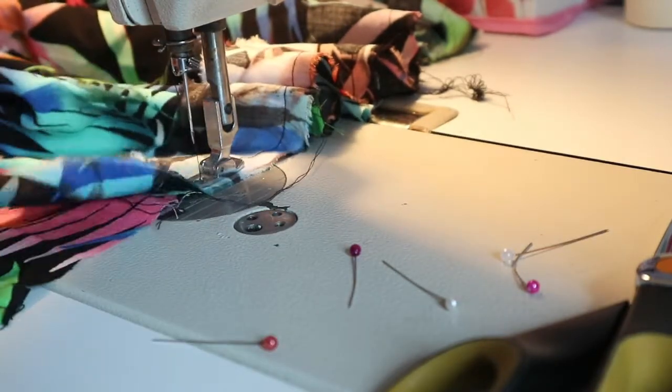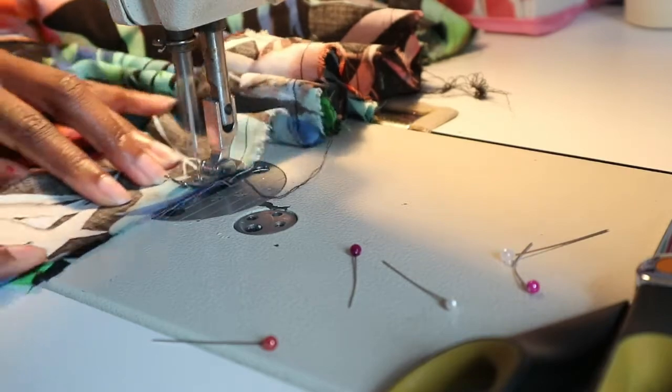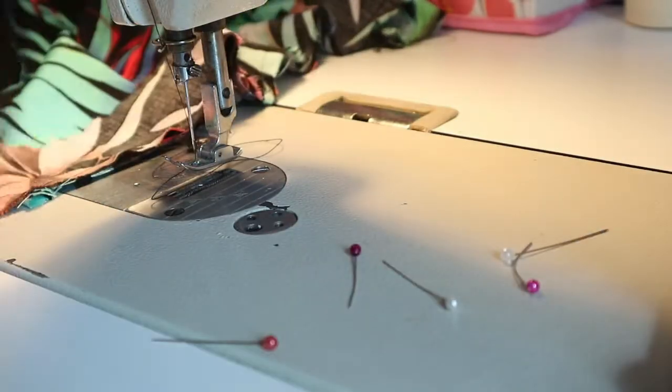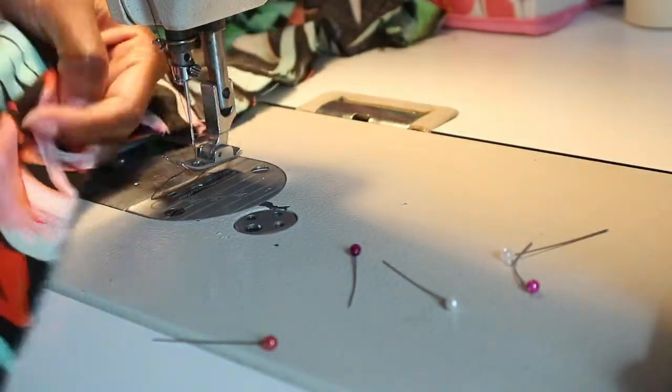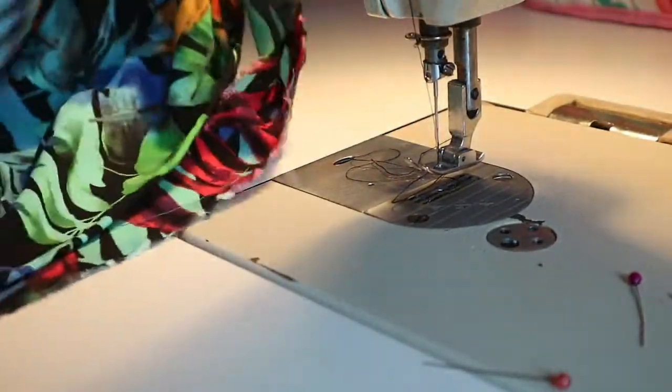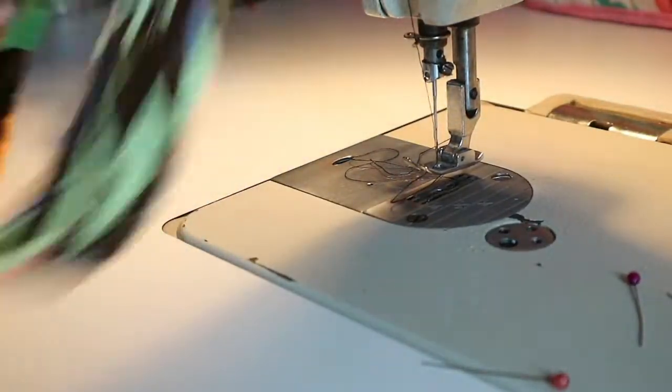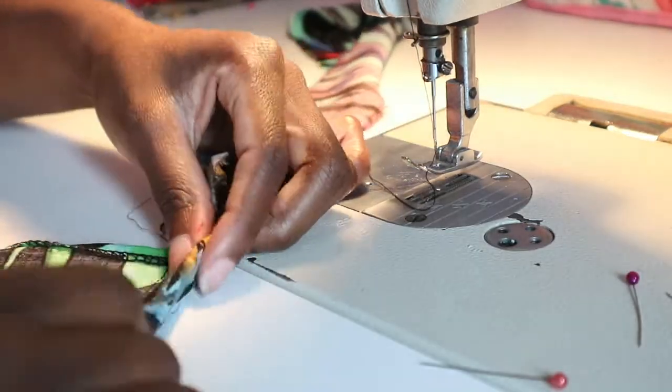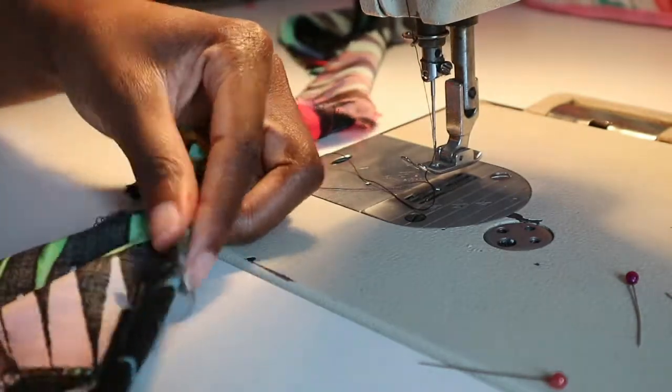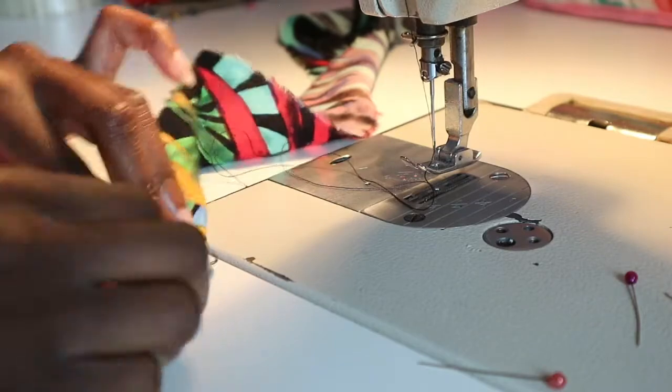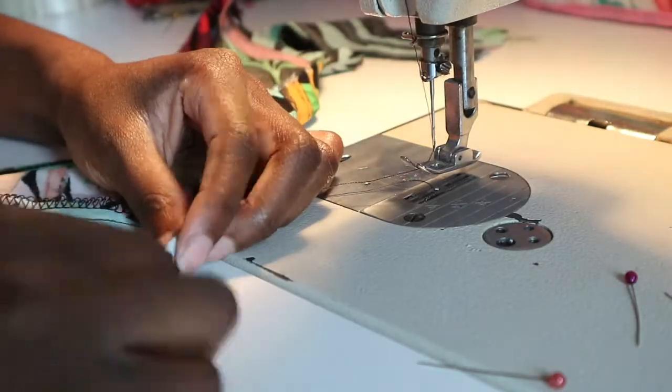Once you're finished stitching that down, you're going to take it to the iron and iron it down. I think I'm going to be lazy and not do that—that's exactly what I did. But at that point, I would definitely take it to the machine and iron it. But I'm being lazy, so I'm just going to pin it in place. Then you're just going to see how it kind of comes together once you start turning it over. You have a really clean finish and waistband once this is done.